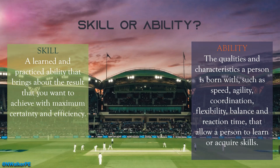As we can see, ability is something that is innate, inherited, and natural to a performer. Whereas skill is defined as a learned and practiced ability that brings about the result you want to achieve with maximum certainty and efficiency. Skill is something that is learned, practiced, and rehearsed over time, using the underpinned abilities and allowing a performer to learn sport-specific skills that allow them to be successful when playing.